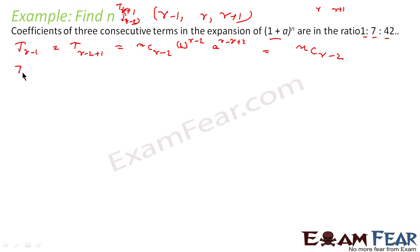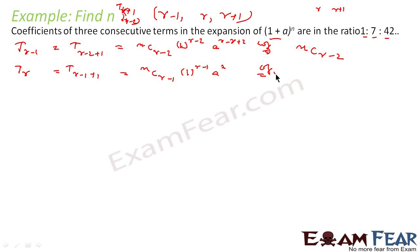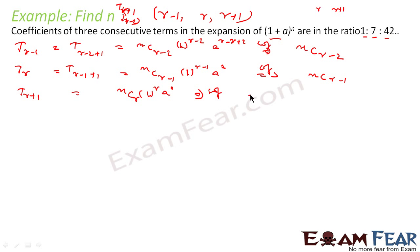Similarly, when talking about T(r), this is T(r-1+1), which gives coefficient nC(r-1) into 1^(r-1) into a^1. So the coefficient for T(r) is nC(r-1). Similarly, T(r+1) is already in the standard format, giving nC(r) into 1^r into a^0. So the coefficient of T(r+1) is nC(r).